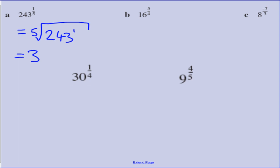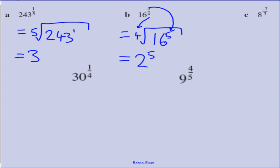Next: 16 to the power of 5 quarters. The denominator 4 becomes the power of the root sign, and the numerator 5 joins the 16 as its power. We can apply the root first: what number multiplied by itself 4 times gives 16? That is 2. So we're left with 2 to the power of 5, which is 32.